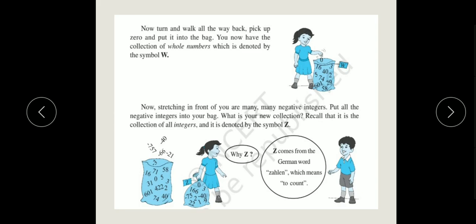Now, let's go further. Now, stretching in front of you are many negative integers. Now we're walking further on the number line. Then, we get many negative integers, like minus 1, minus 2, minus 3, minus 4 and so on. Put all the negative integers into your bag. Now, what we have to do? We have put all the negative integers into your bag. Now, what is your new collection? Again, we get new collection.